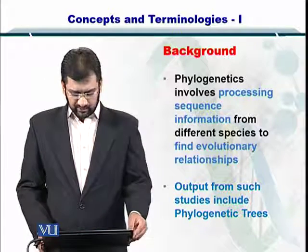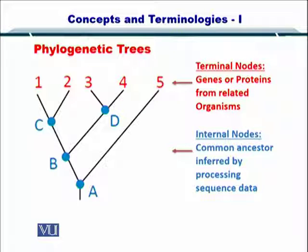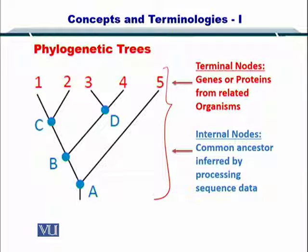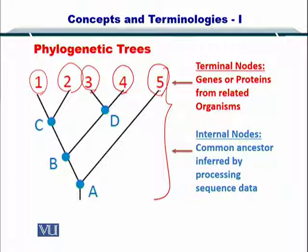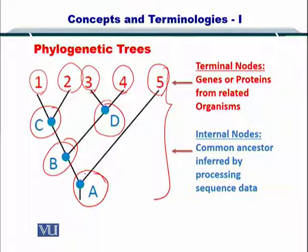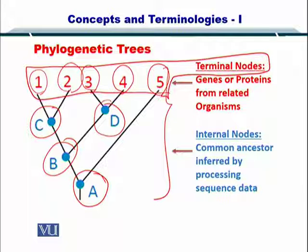The output from such studies is a phylogenetic tree, as you can see in this slide. This phylogenetic tree includes 5 sequences taken from different species and then linked together through C, D, B, and A. The 5 sequences are called the terminal nodes. These can be the genome sequences or the protein sequences from related organisms or species.